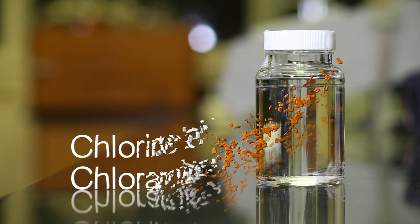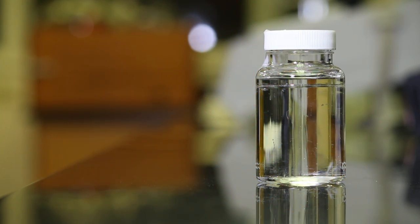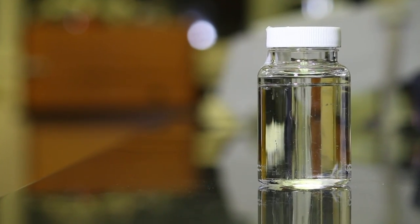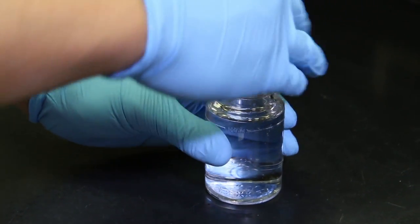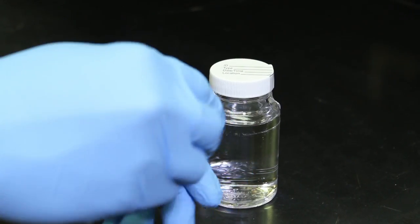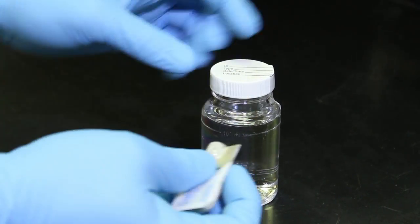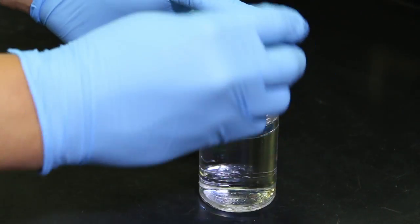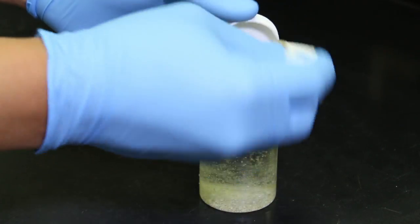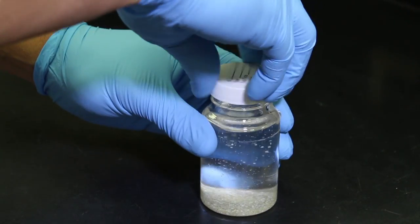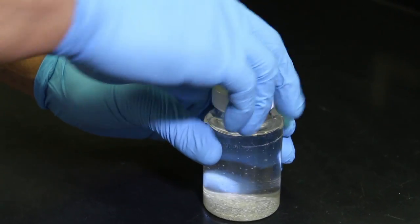Once the sample is transported to the laboratory, the sample vial is reopened and a pre-measured amount of the Colilert growth media, MMOMUG, is added to the vial. The vial is then reclosed, thoroughly shaken, and placed in an incubator.